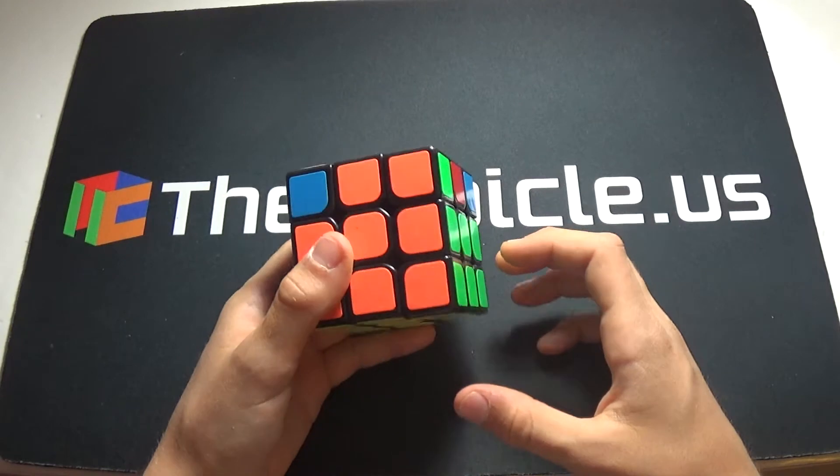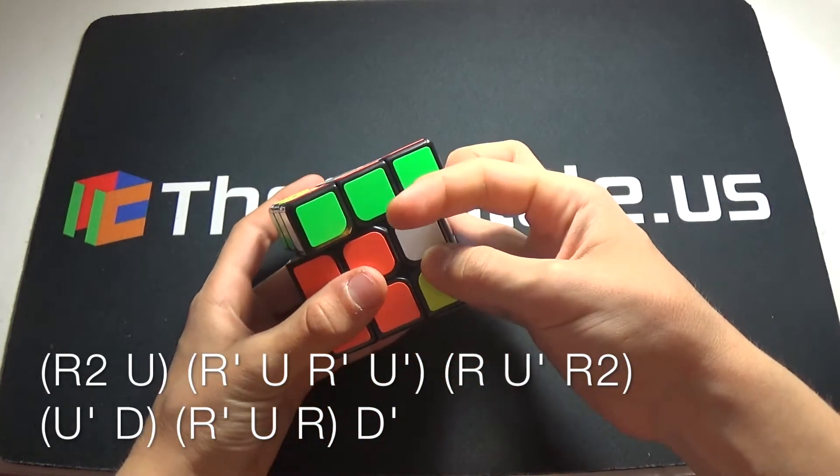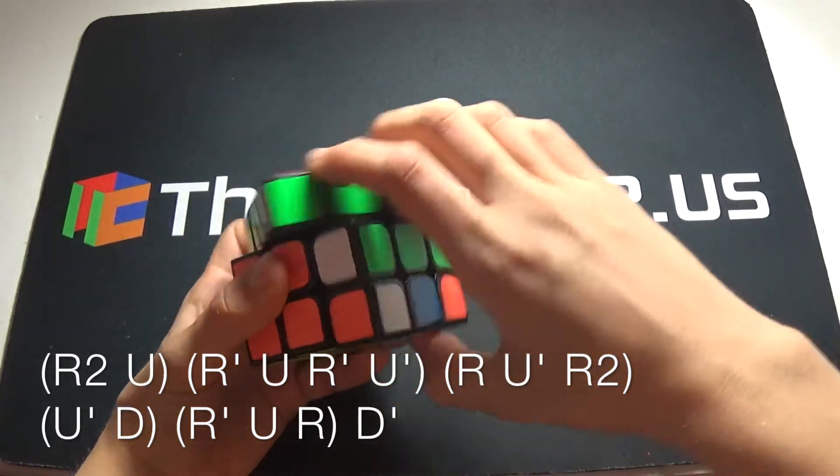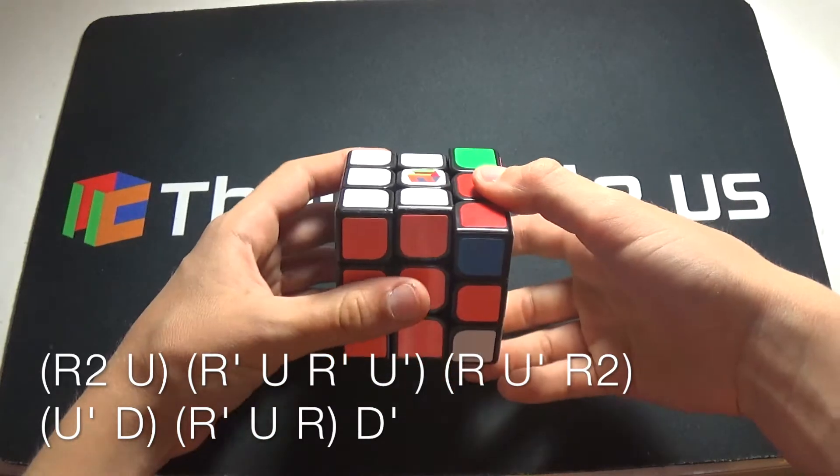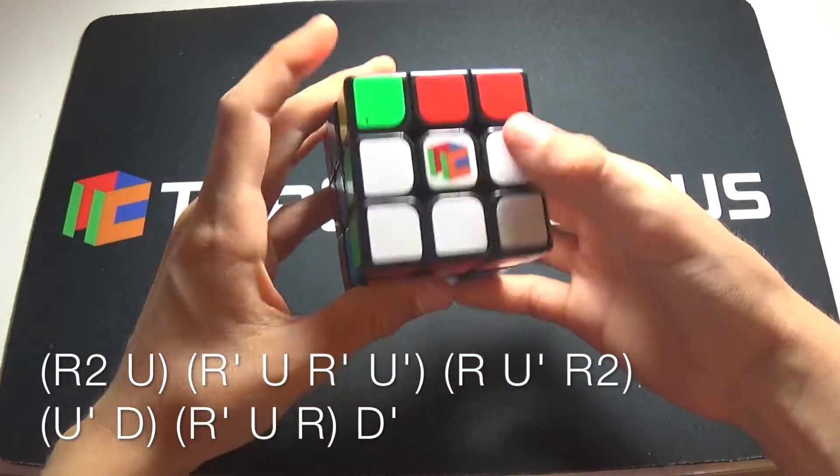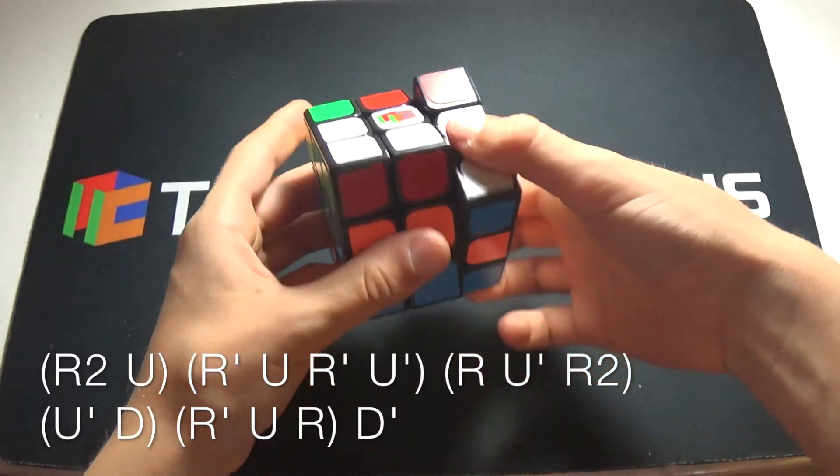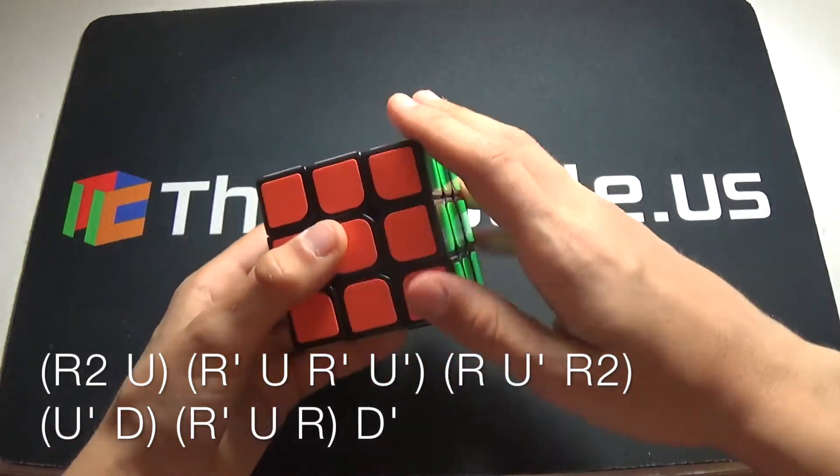You start the algorithm by R2 U R' U R' U' R U' R2 U' D, and insert from the back, insert the pair. R' U' R, and then D' and AUF.